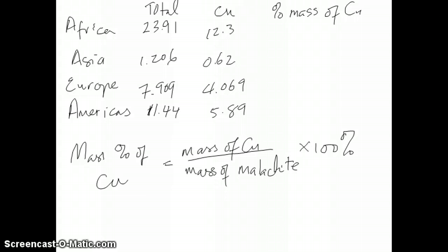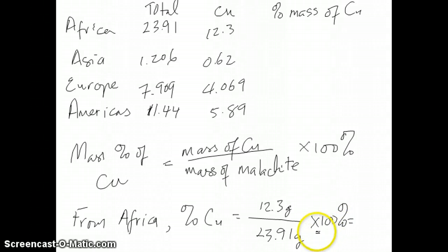So let's try to do this for one of the samples from Africa. So if we do this from Africa, the data would then tell us that percent copper should be 12.3 grams, because that's how much copper we have, divided by 23.91 grams times 100%. If you do that calculation in a calculator, you should get 51.4%. So I'm going to put that number right here, 51.4%. And you can do all of these ones as well. I'm going to do that right now and then just write down the numbers.